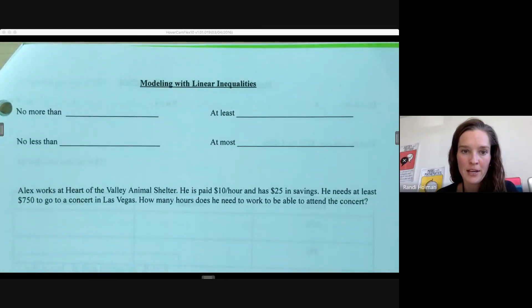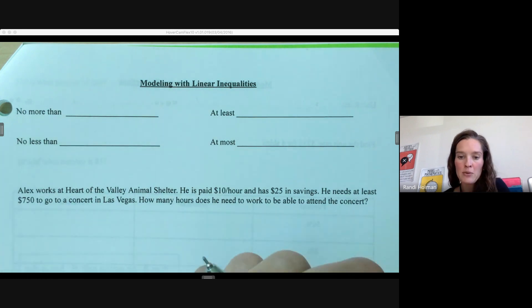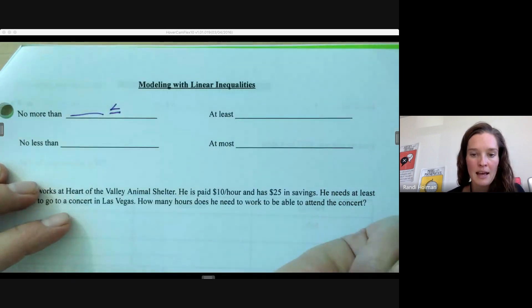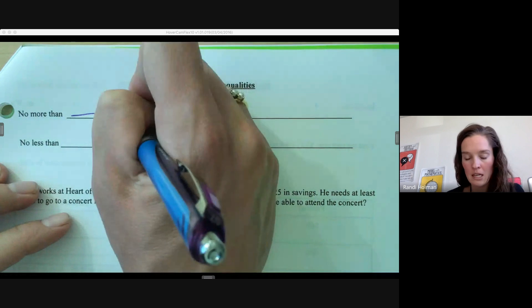Welcome. In this video we're going to be looking at modeling with linear inequalities. A few key things to look at before we get started—some vocabulary. If something is no more than something, that means it can be up to and equal to but not bigger. So if it's no more than, it has to be less than or equal to whatever the thing is.